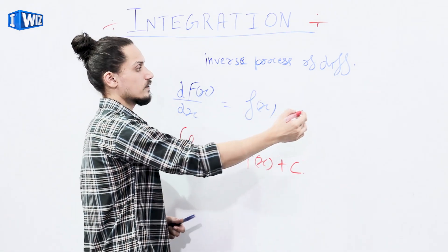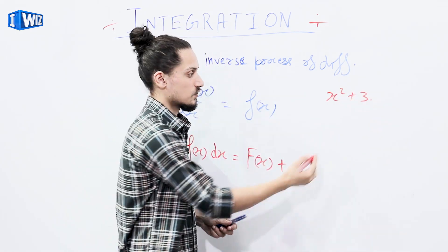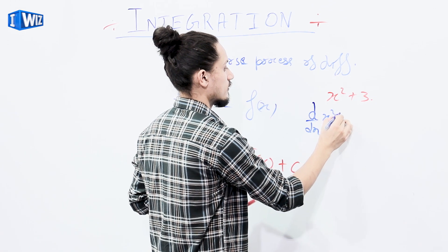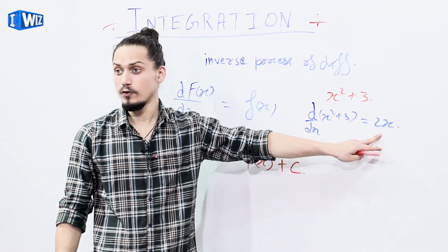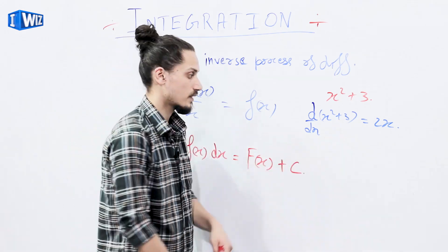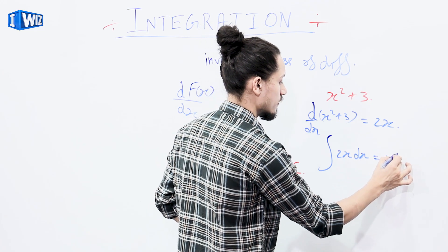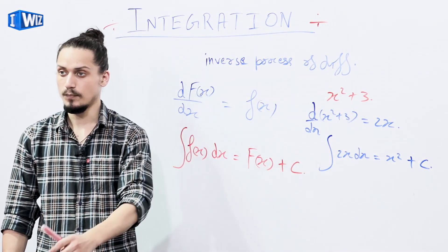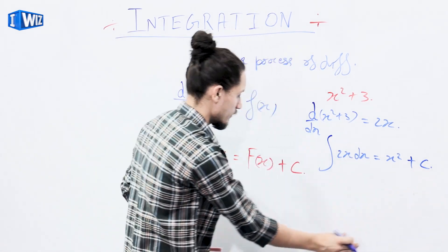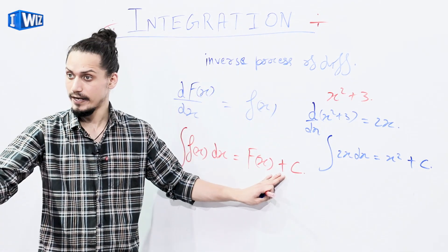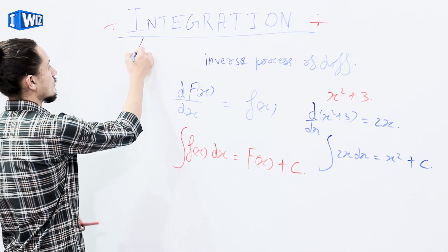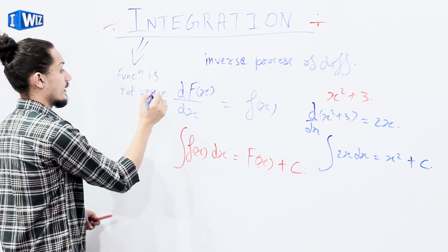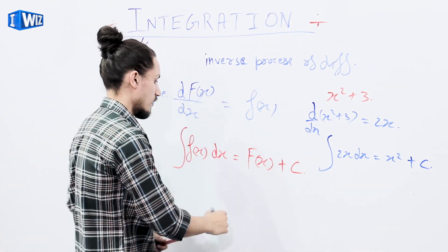Suppose we are given a function x² + 3. If we differentiate it we get d/dx of x² + 3, which gives 2x. If we do its integration, we'll get back this function — integration of 2x dx equals x², but the 3 can be any constant. So we use a constant of integration. This constant can have any value 1, 2, 3, and so on. Since C can have any value, the integration of a function is not unique, and such integrals are called indefinite integrals.